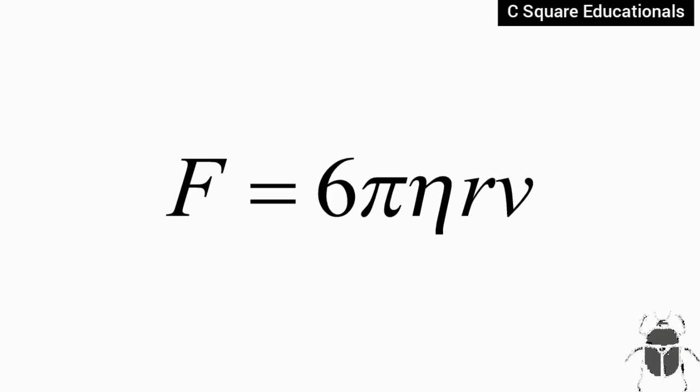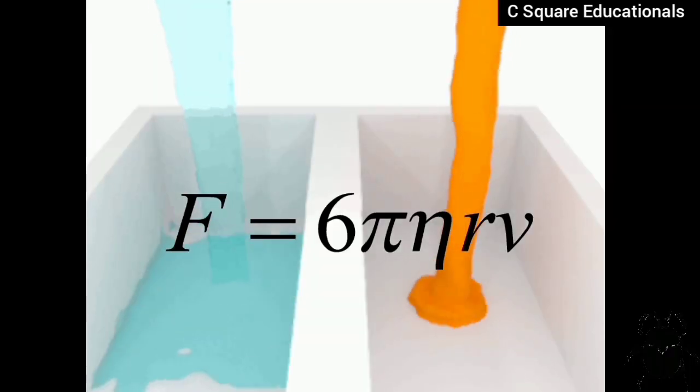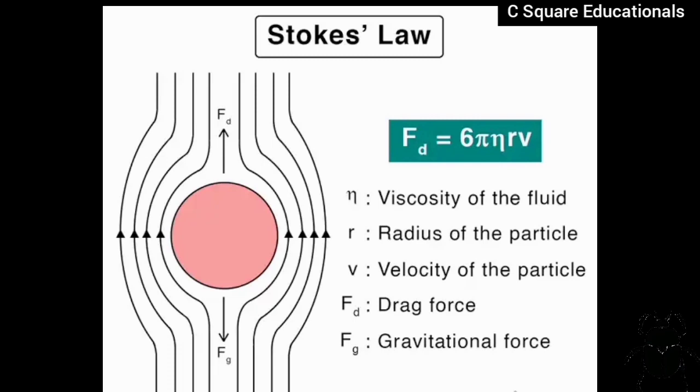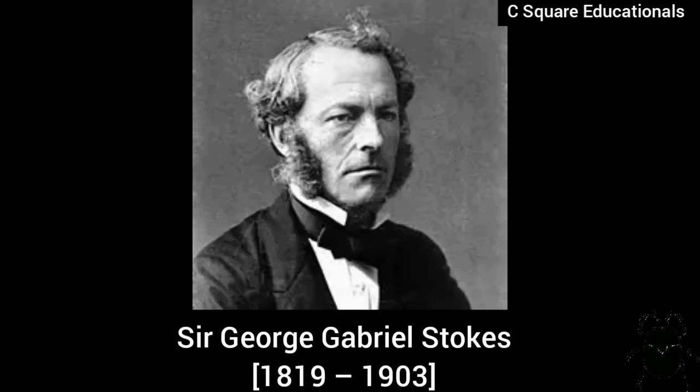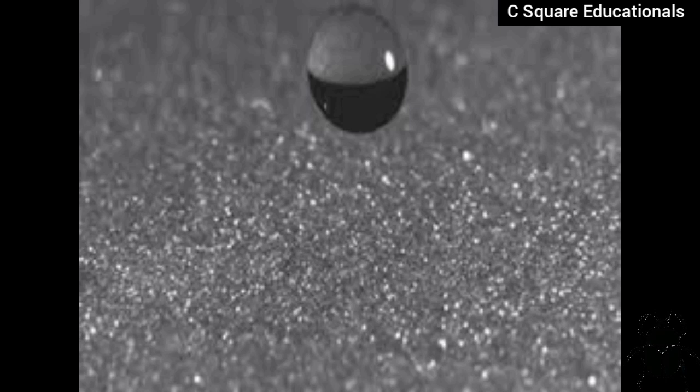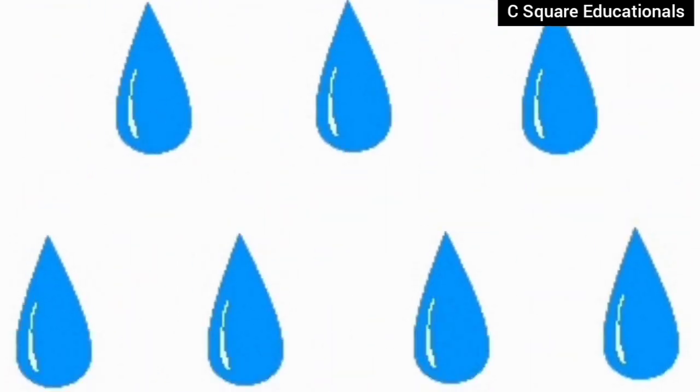To give you know that Stokes' law is a mathematical equation. The equation expresses certain velocities of small spherical particles in a fluid medium. The equation was derived in 1851 by Sir George G. Stokes and can help us understand miracles like why the raindrop does not kill us even though they are falling from tremendous heights.